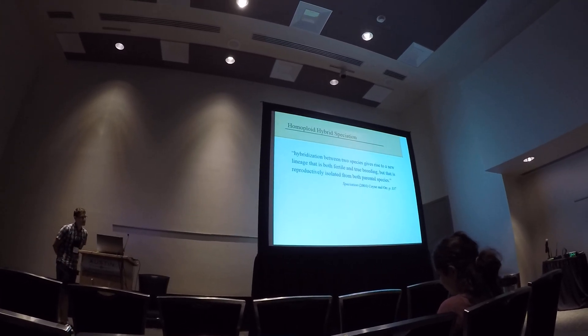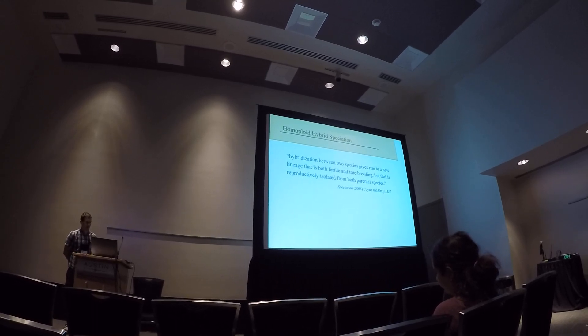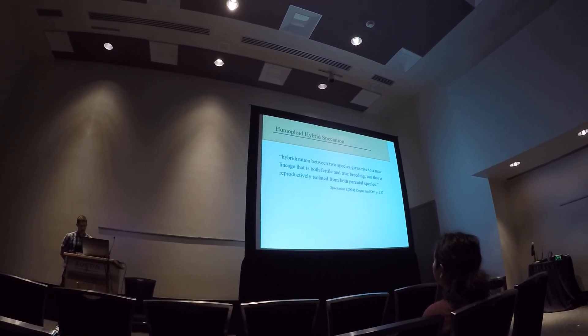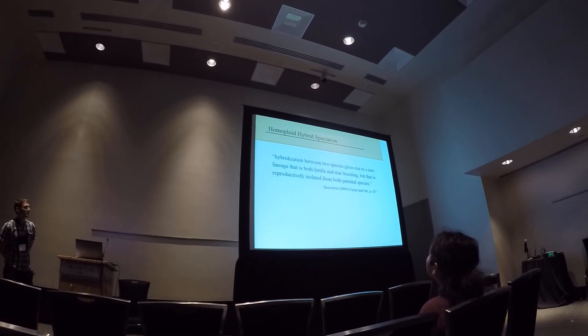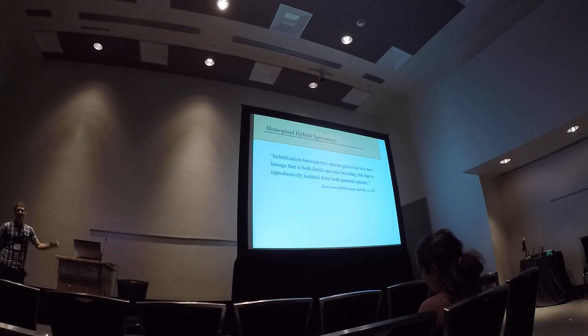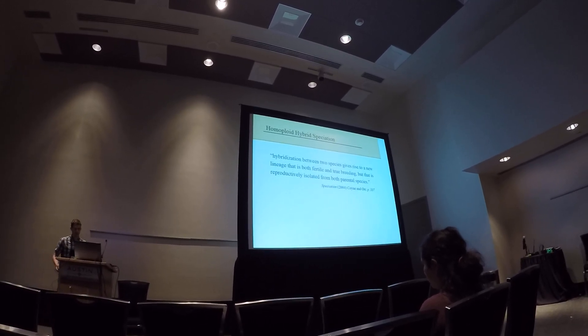So homoploid hybrid speciation occurs when hybridization between two species generates a new lineage that is both fertile and true breeding, but that is reproductively isolated from both parental species. And this is different than polyploid hybrid speciation because ploidy is maintained, it is the same between the parental species and the hybrid species.